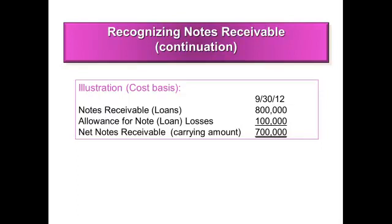How do we determine a note receivable's net realizable value? On the screen, you see my notes receivable started out at $800,000 on September 30, 2012. Also at that time, your allowance for note losses is $100,000. A note could have a loss, so you estimate the allowance for note losses in the same manner as you would estimate accounts receivable. We assume $100,000 of the $800,000 will be lost. So what do you expect to realize? That would be $700,000 — that is the carrying amount of the note.